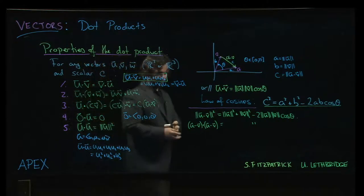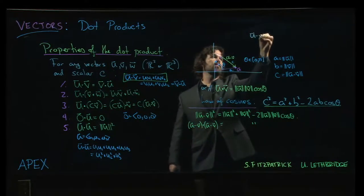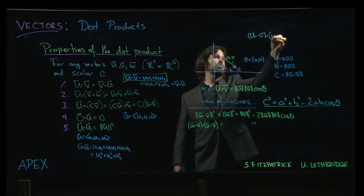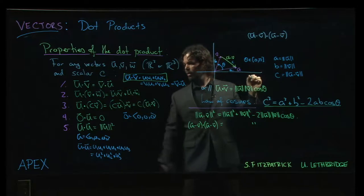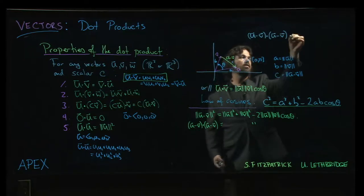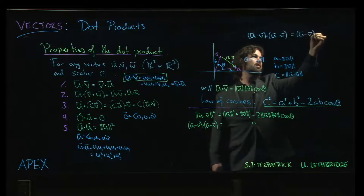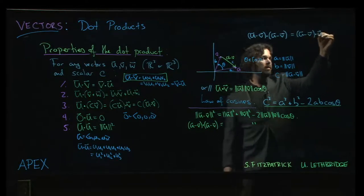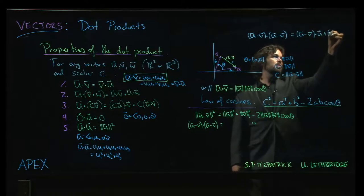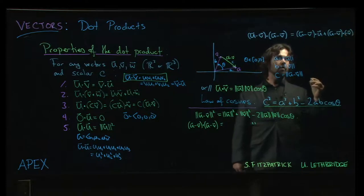I'm going to kind of maybe do this on this side. So when I do u minus v dotted with u minus v, I can use that property number 2 to write that as u minus v dot u and then u minus v dotted with minus v.